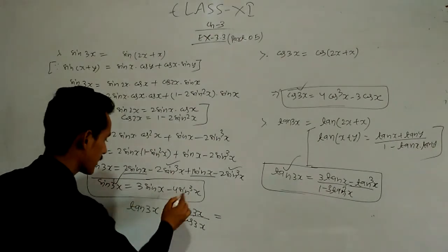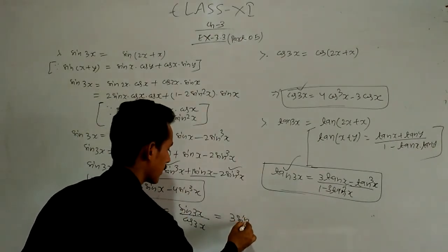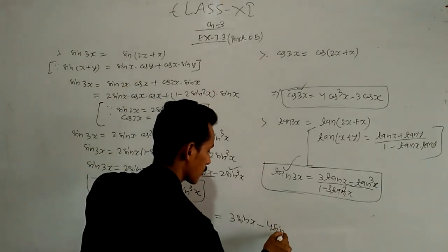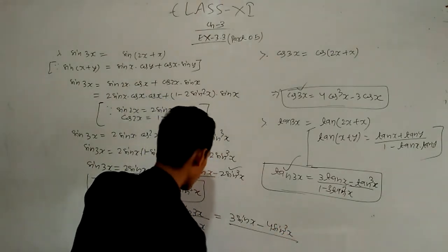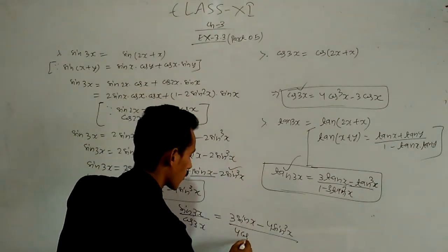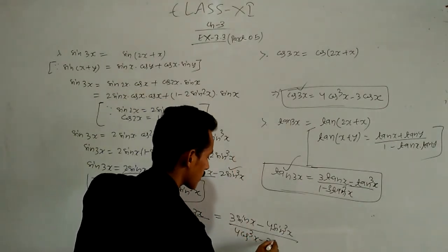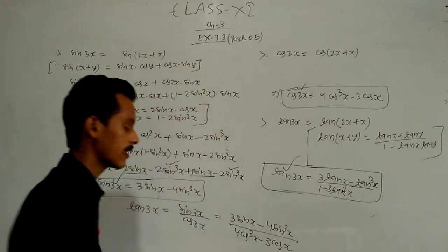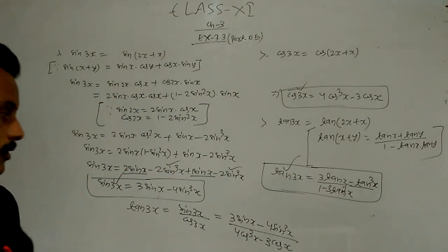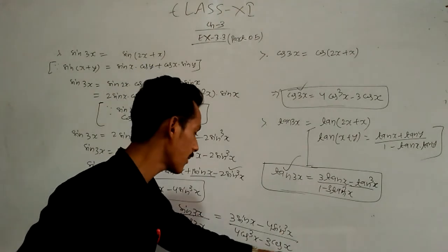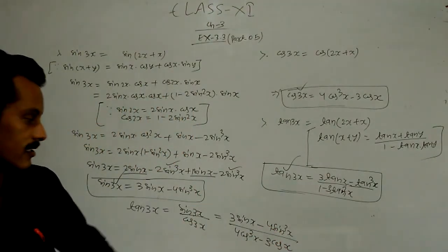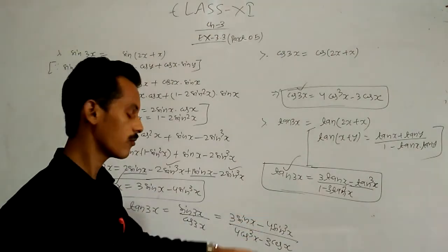Substituting the values: sin 3x = 3 sin x − 4 sin³x in the numerator, and cos 3x = 4cos³x − 3cos x in the denominator. Now divide everywhere — numerator and denominator — by cos³x, and you will get the value of tan 3x.